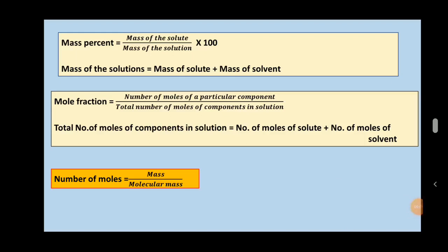Now the formula for mass percent: mass percent = (mass of solute / mass of solution) × 100. Since it is a percent, multiply by 100. Mass of solution means it includes both solute and solvent: mass of solution = mass of solute + mass of solvent.